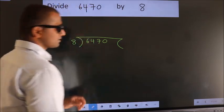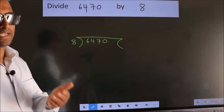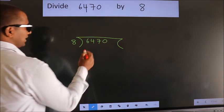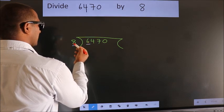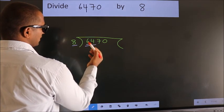This is your step 1. Next, here we have 6, here 8. 6 is smaller than 8, so we should take 2 numbers: 64.